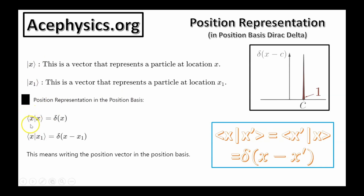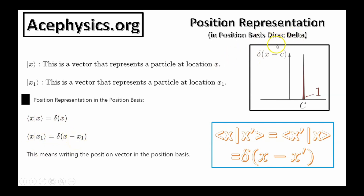When I write the bra like this, that represents the particle in the position basis, and it's equal to the Dirac delta function. The delta function is the position representation in the position basis: x1 equals delta of x minus x1. This represents a particle of location x1 in the position basis. To plot the delta function — delta of x minus c, for example — would be a spike at location c, meaning there's a particle located at position c.